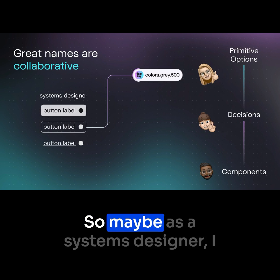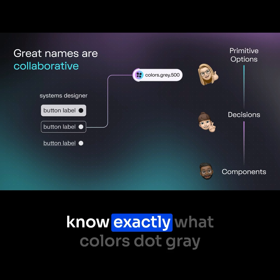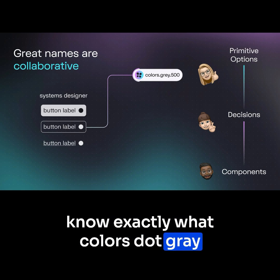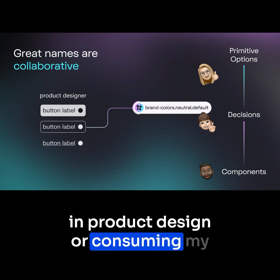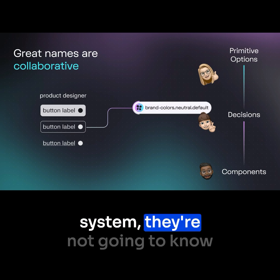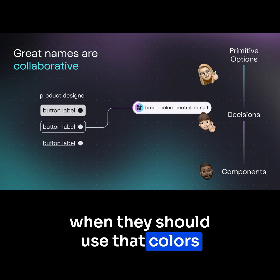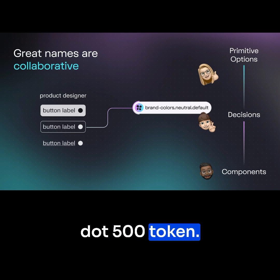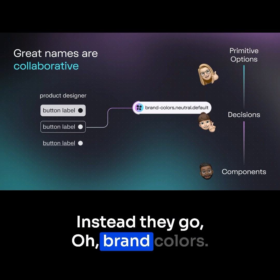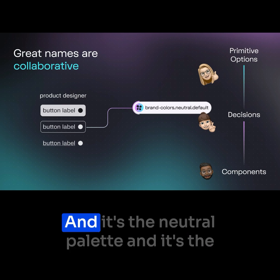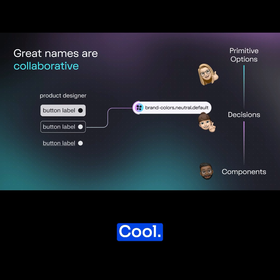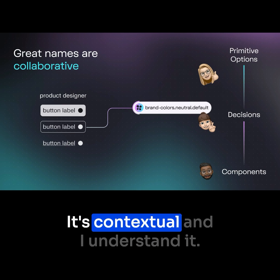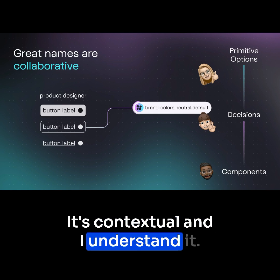Maybe as a systems designer, I know exactly what colors.gray500 means. But people working in product design or consuming my system, they're not going to know when they should use that colors.500 token. Instead, they go: oh, brand colors, it's the neutral palette, and it's the default version. Cool, I know what that means. It's contextual and I understand it.